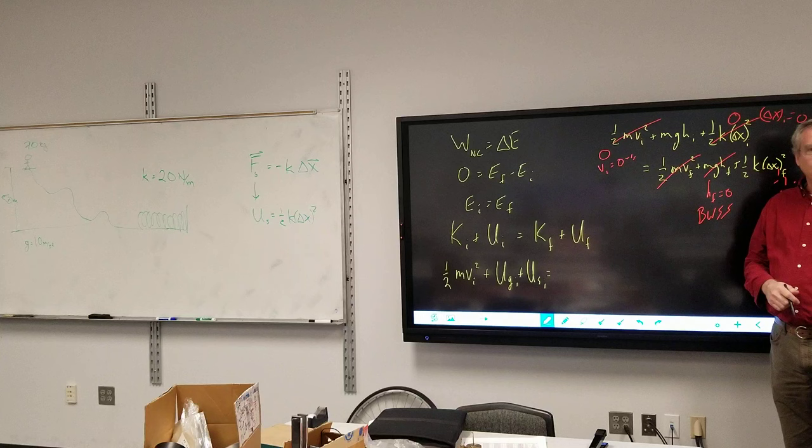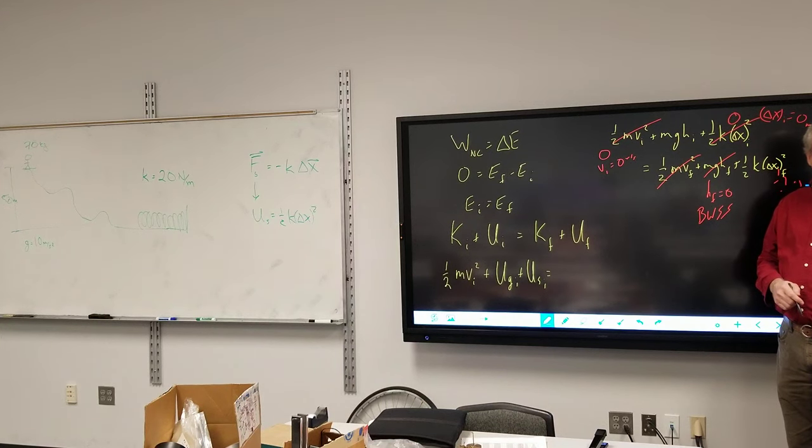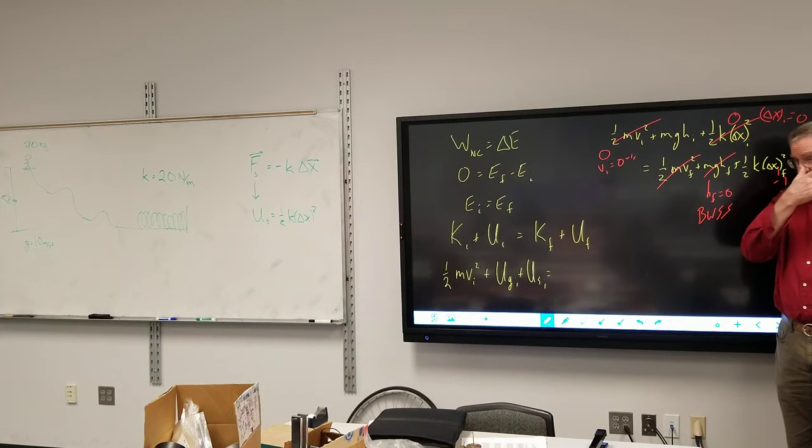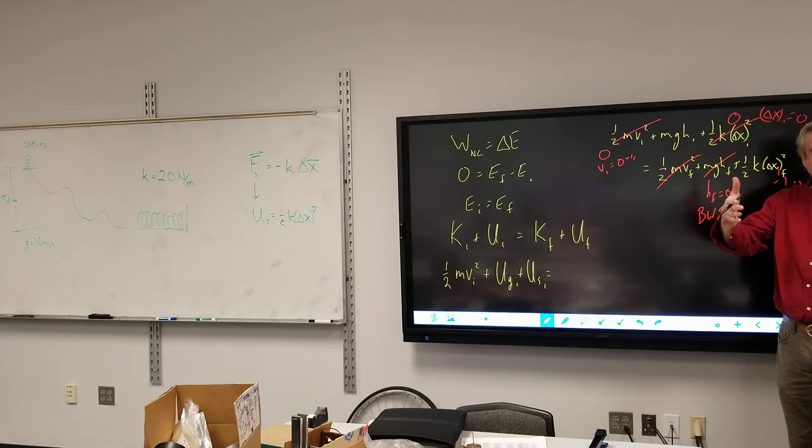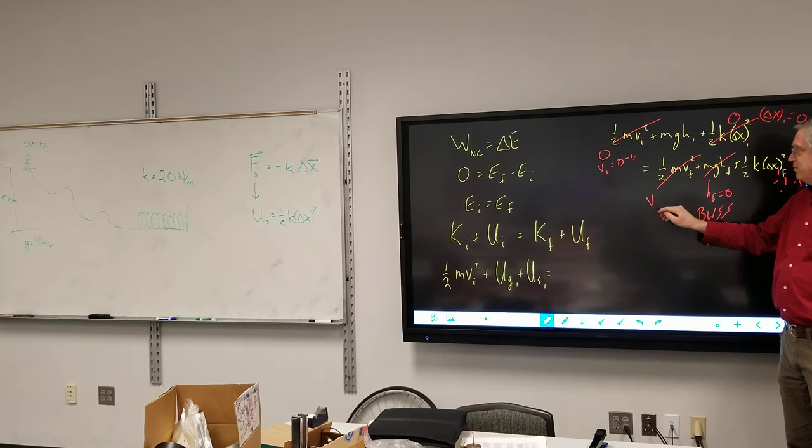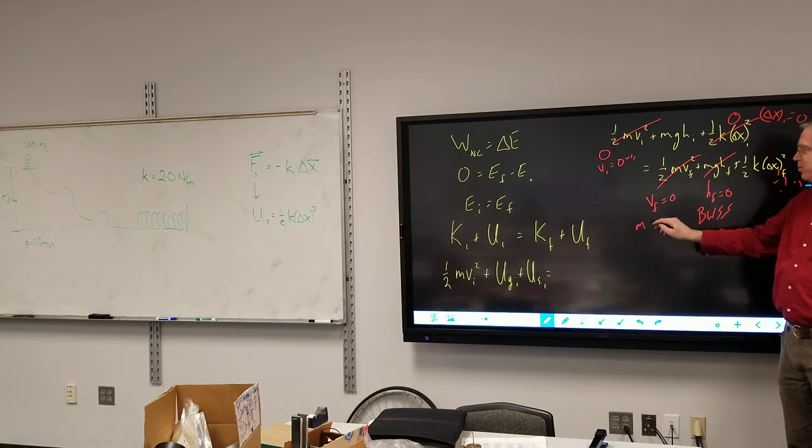So when we are going all the way and we hit the maximum spring, we're just stopping there. We're not coming back or anything. Oh, we will shoot back, but we don't care about the shooting back at this point. We just care about how far does it go. At maximum compression, you have to stop in order to turn around. Because V final equals zero at maximum compression.